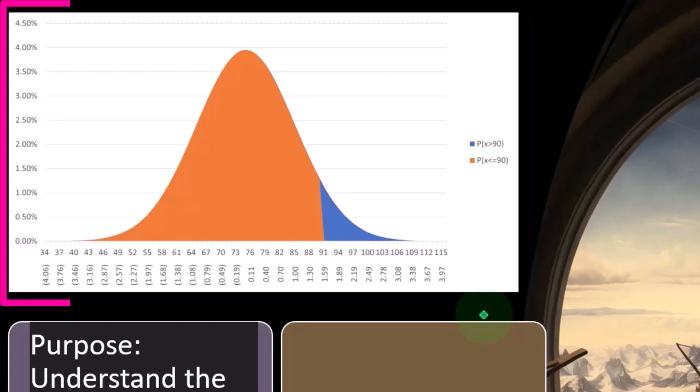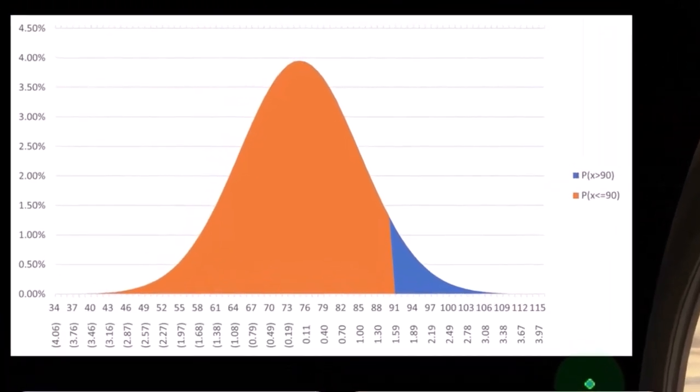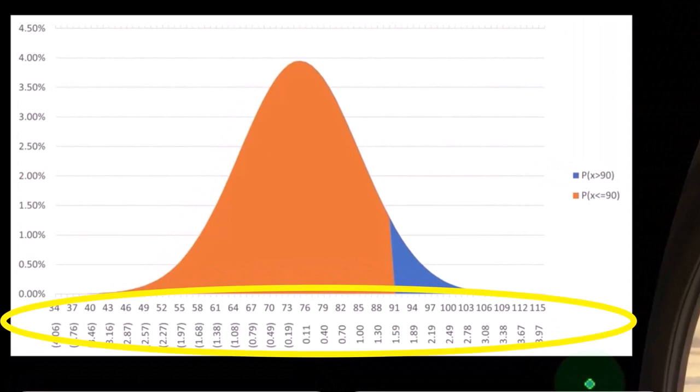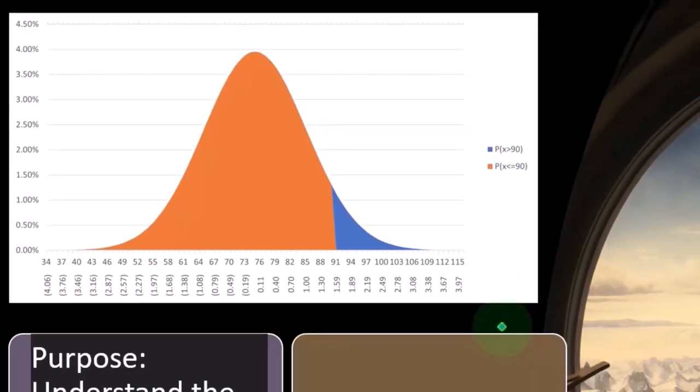...we want to see whether or not that data set will conform to some type of curve that we can apply a formula to. If it does, such as the bell-shaped curve, then that would be great. And the bell-shaped curve has some unique characteristics related to it, which are also quite useful that we'll take a look at.